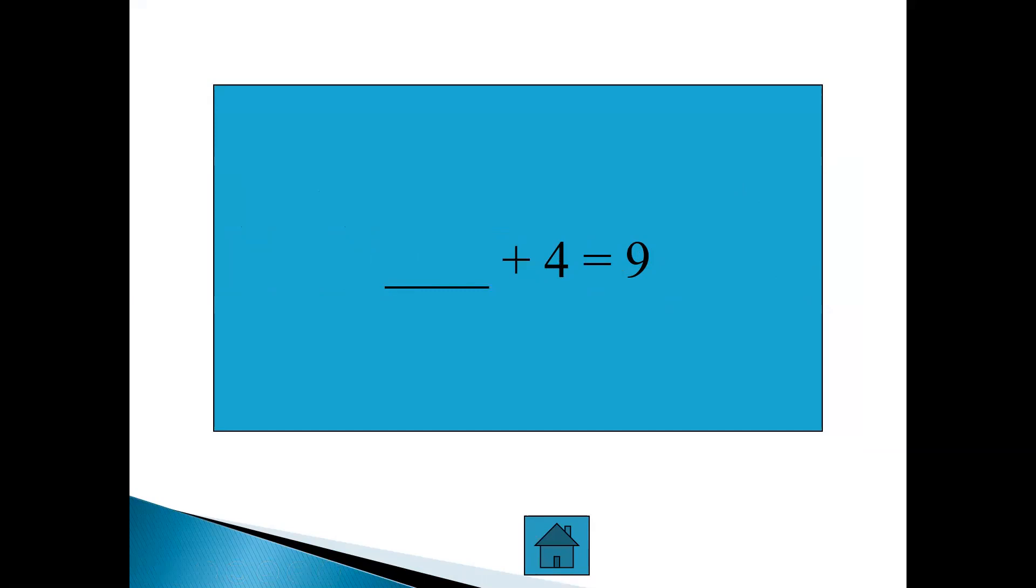Let's hold up nine fingers first. One, two, three, four, five, six, seven, eight, nine. Okay. Do you have nine fingers? Good. On one hand, we have four fingers. How many do you have on the other hand? You got it? The answer is five. Five plus four equals nine. Very good.